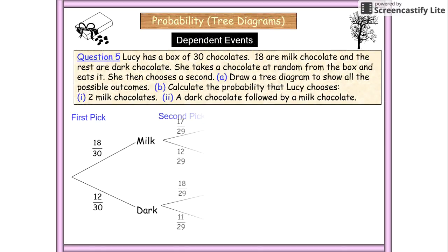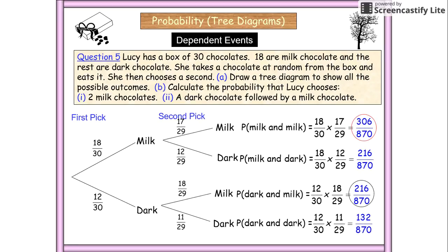Here is another example. So just let's have a look at this. She's got a box of 30 chocolates. So that's our total, 18 are milk, the rest are dark. So 18 out of 30 is where we begin, 12 out of 30 are the dark,